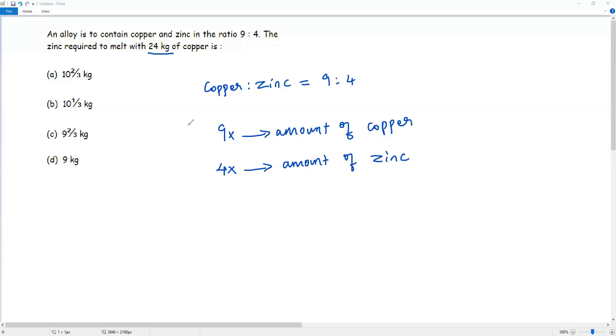From the given ratio, we got the amount of copper as 9x. So we can equate 9x and 24 because both 9x and 24 refer to the same thing: the amount of copper.